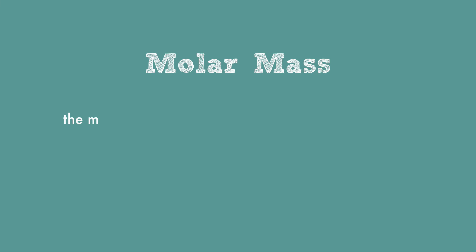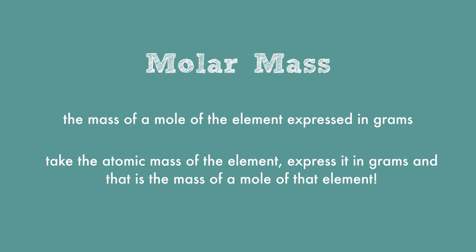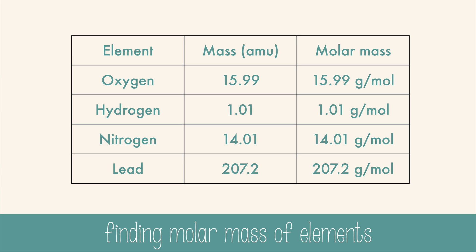To talk about usable quantities of atoms, we use the molar mass, which is the mass of a mole of the element expressed in grams. To find molar mass, all you need to do is take the atomic mass of the element, express it in grams, and that's the mass of a mole of the element. For example, oxygen on the periodic table has a mass of 15.99 AMU, so to make it molar mass, just change the units from AMU to grams per mole.